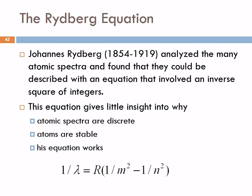Johannes Rydberg looked at these atomic spectra and tried to figure out the relationship between the lines, since they're always the same for a given element. He found he could describe them with an equation involving an inverse square of integers: one over lambda equals R times (one over m squared minus one over n squared), where n and m are integers. But this is just a law — an observation. It doesn't explain why atomic spectra are discrete, why atoms are stable, or why his equation works.